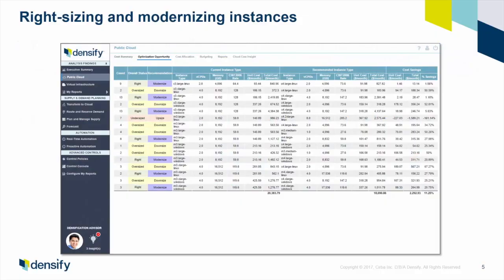A lot of people, when they get an Amazon bill that's way bigger than expected, rush out to buy something that will read the bill. We do that too — we have a part of our product that will analyze the bill for you. But that's not where you really save money; it just lets you understand what happened. When saving money, the first step is to make sure your cloud is the right size — that you're buying the right stuff — so we do a detailed analysis telling you whether things are too big, too small, or just right.